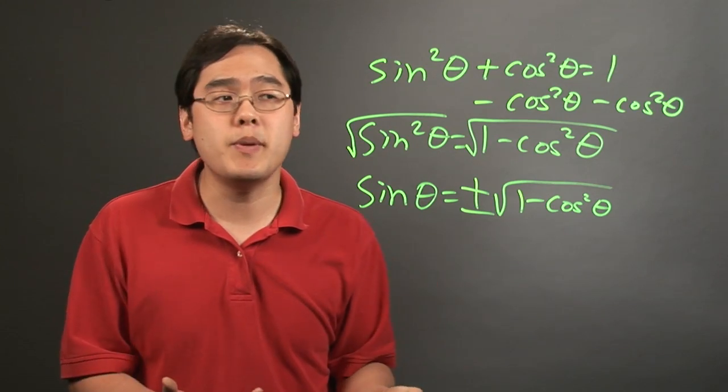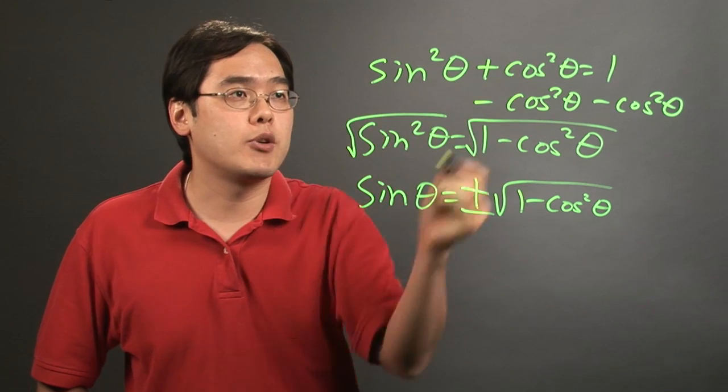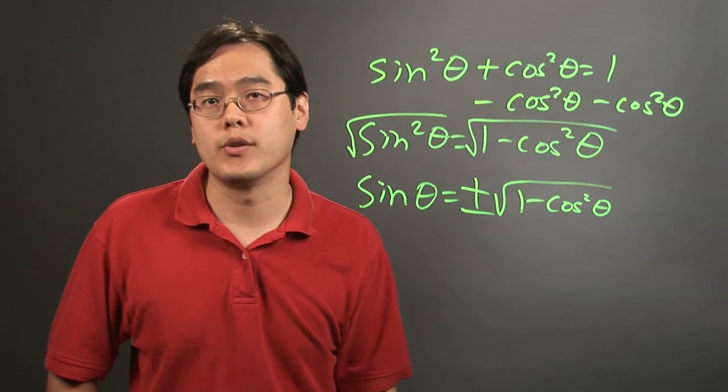Similarly, if your job is to solve for cosine theta, you do the exact same thing. Subtract sine squared from both sides and then take the square root of both sides.